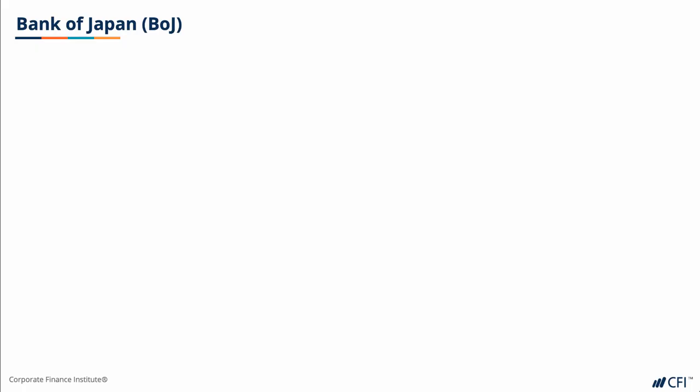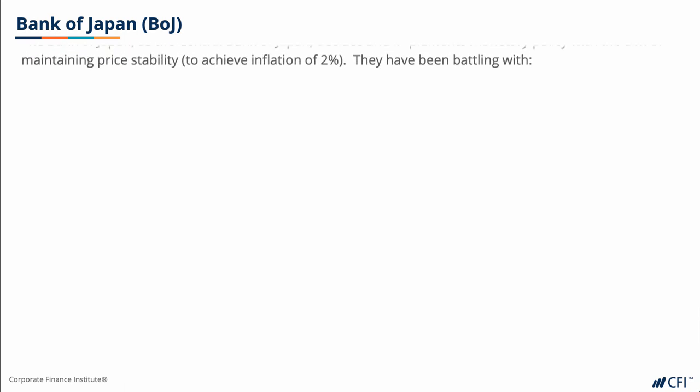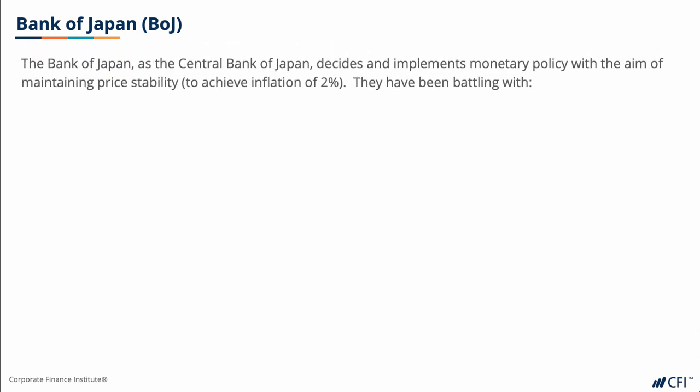On to Japan next. The Bank of Japan, as the central bank of Japan, decides and implements monetary policy with the aim of maintaining price stability, targeting an inflation rate of 2%.